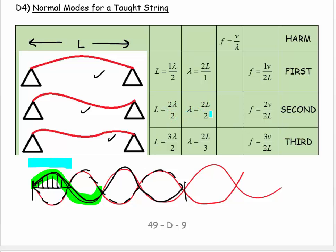So wavelength is equal to 2L over 2. And if I rearrange, lambda is equal to 2L over 3. Can you see this pattern? It's 2L over 1, 2L over 2, and then 2L over 3.